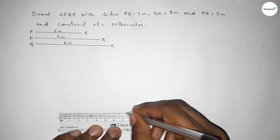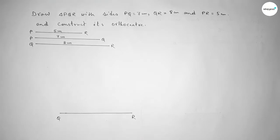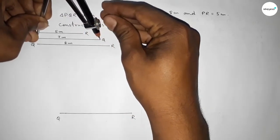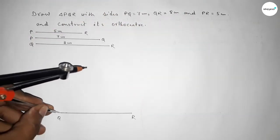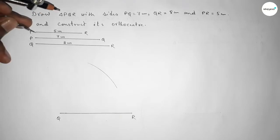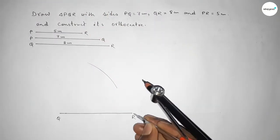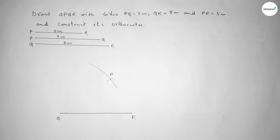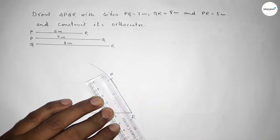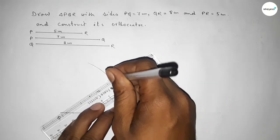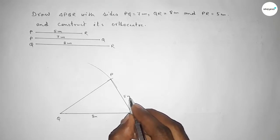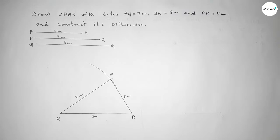Now first we draw a line of length 8 centimeter, taking points Q and R. Then taking length 7 centimeter for PQ using the compass, putting the compass on point Q and drawing an arc. Then taking length 5 centimeter for PR, putting the compass at R and cutting an arc — both curves intersect at point P. Now joining P to R and then joining P to Q. This side is 8 cm, this side is 5 cm, and this side is 7 cm.